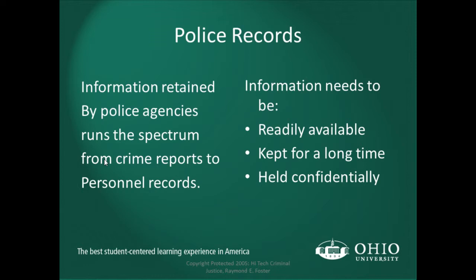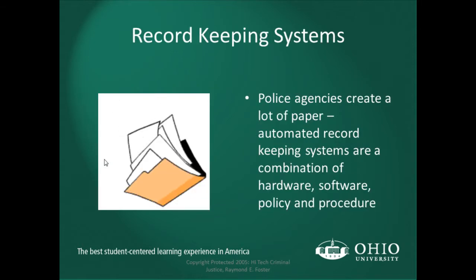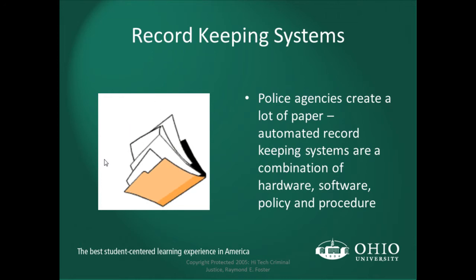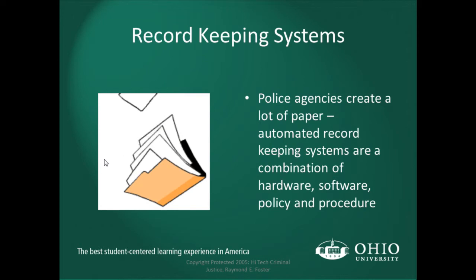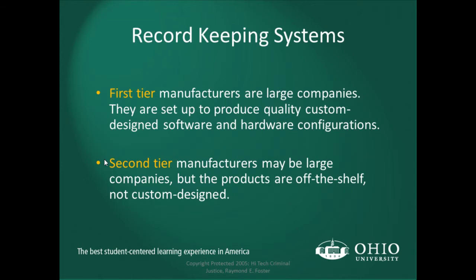Information is needed, but it's important that it be readily available, kept for a long time, and clearly one of the most important things is that it be held confidentially. Police agencies create a lot of paper. Automated records keeping systems are a combination of hardware, software, policies, and procedures. Despite the desire to be completely paperless, most police departments still have a hybrid — information kept in a records management system and also kept in paper form.